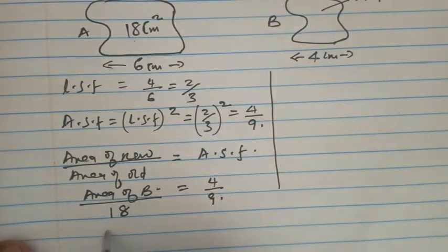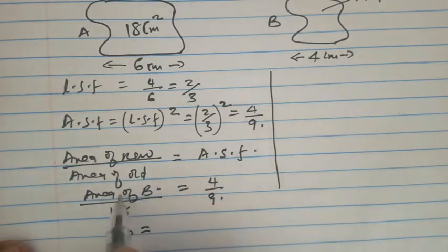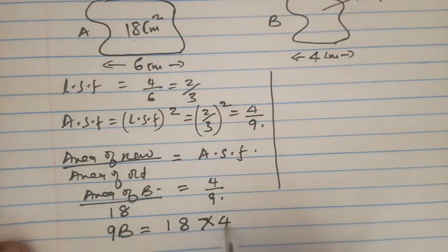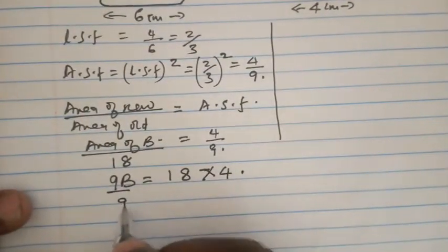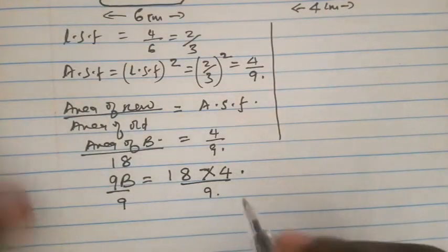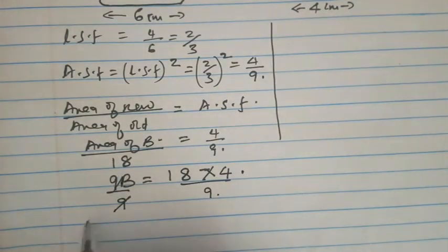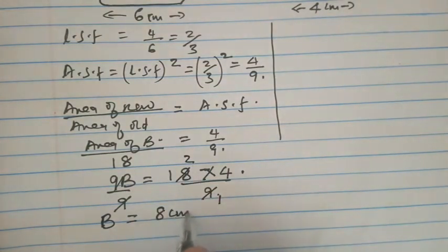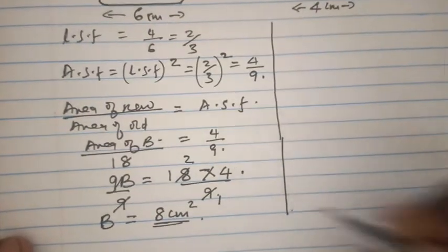Taking B to represent the area of shape B and cross-multiplying, we get 9B equals 18 times 4. Dividing both sides by 9 to make B the subject, we find that the area of B is 8 centimetres squared.